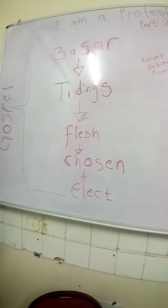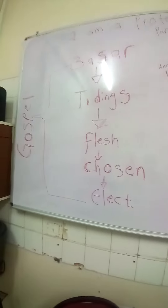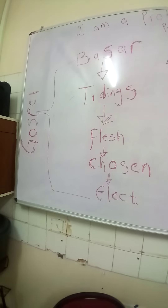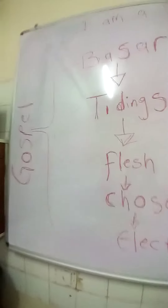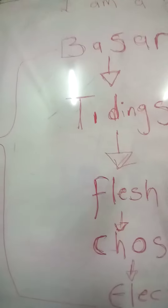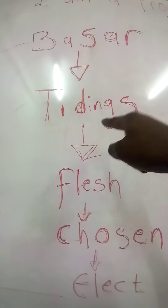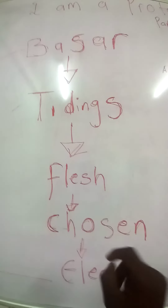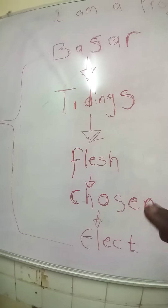I'm just going to show you a little clip on the words that we'll be looking at in the study. You can see there's the word 'gospel' in the corner of the board. This word 'gospel' in the Hebrew is the word translated as 'tidings' when you read it in the Old Testament — it's the word 'Berser.' So we're going to break down Berser: tidings, flesh, chosen, and elect. This is going to be the focus — a very beautiful study looking at this word gospel.